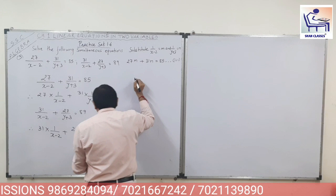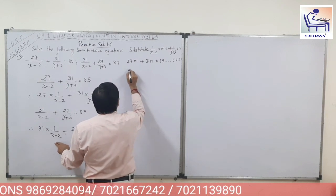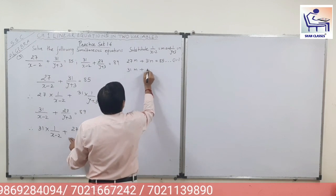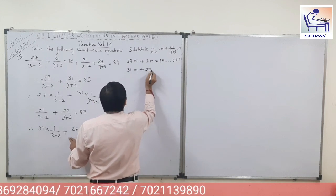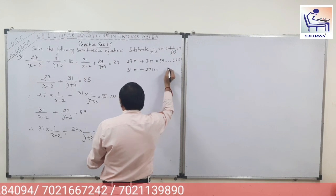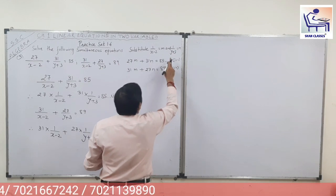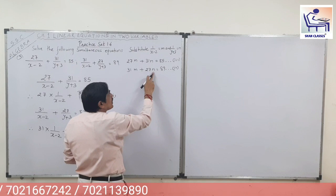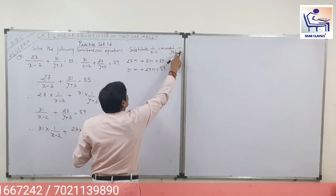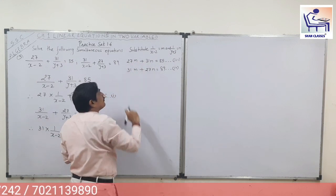And from equation number 2 I get equation number 4: 31M plus 27N is equal to 89. Please remember: I have replaced 1 upon (y plus 3) with N and 1 upon (x minus 2) with M.